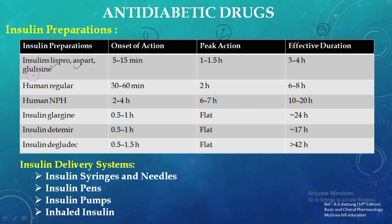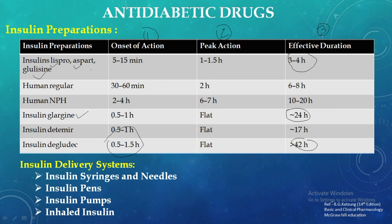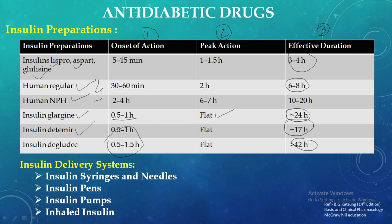Insulin Lispro, Aspart, and Glulisine have an onset of action of 5 to 15 minutes and an effective duration of 3 to 4 hours. Insulin Degludec has the maximum duration of 42 hours with onset of 0.5 to 1.5 hours. Insulin Glargine has an effective duration of 24 hours with onset of 0.5 to 1 hour and a flat peak. Insulin Detemir has an effective duration of 17 hours. Human Regular Insulin and Human NPH are the most commonly utilized preparations, with effective durations of 6 to 8 hours and 10 to 20 hours respectively.